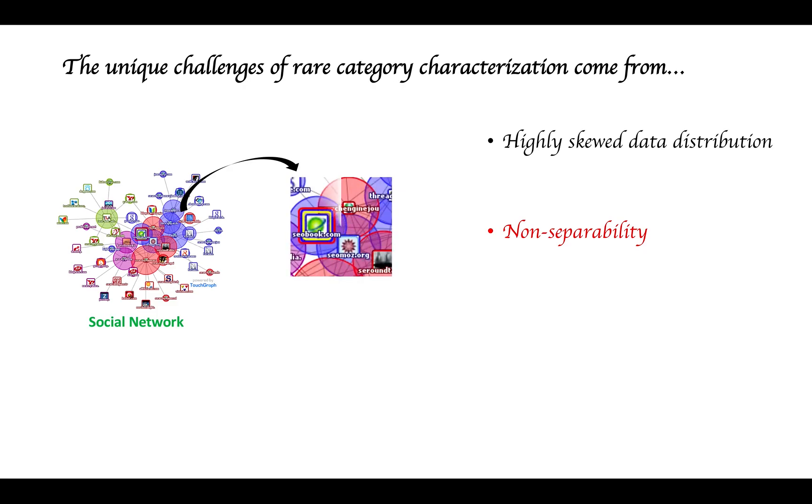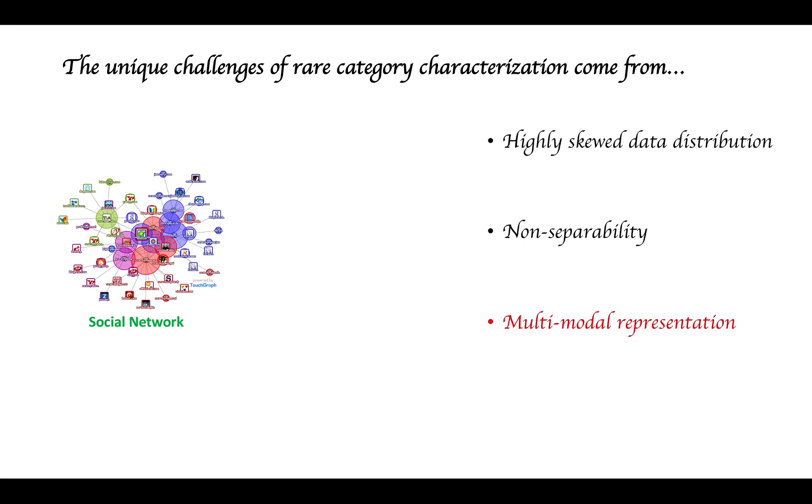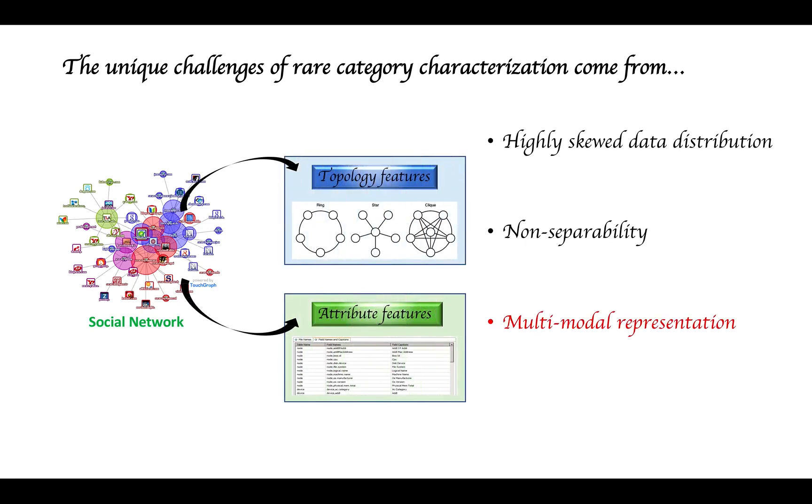The second challenge is the non-separability nature of the rare categories from the majority classes, as the communities are often non-separable in real-world networks. The last one is the availability of multimodal representation of the examples, such as topology features and attribute features.